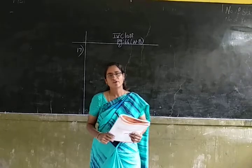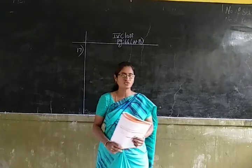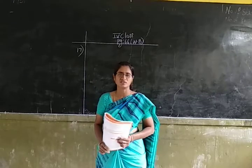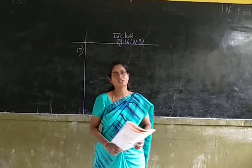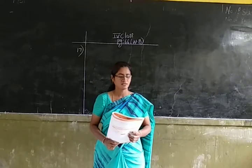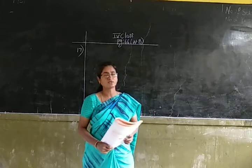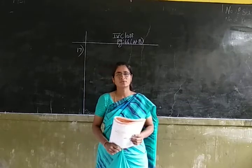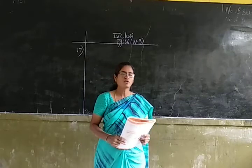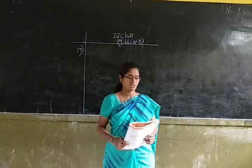For finding out the distance travelled in 1 minute, we have to use the operation division. And for finding out the time required to travel 207 kilometers, we have to use the operation multiplication.